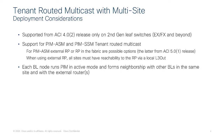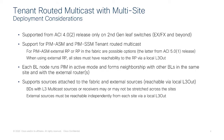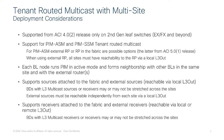Each border leaf node runs PIM and forms PIM neighborships with other border leaf nodes in the same site and with external routers — visible via the 'show ip pim neighbors' command on the border leaf. We support sources that can be internal to the fabric or fabrics in the multi-site domain, and also external sources reachable by the local L3 out. The same is true for receivers, which can be connected inside the fabrics or be external, reachable by a local or remote L3 out.